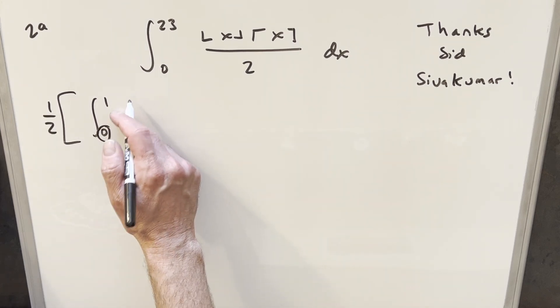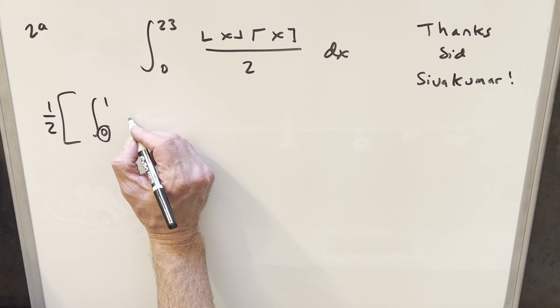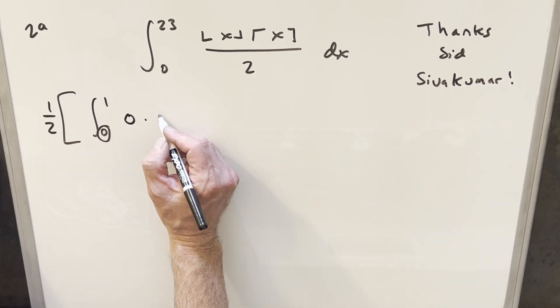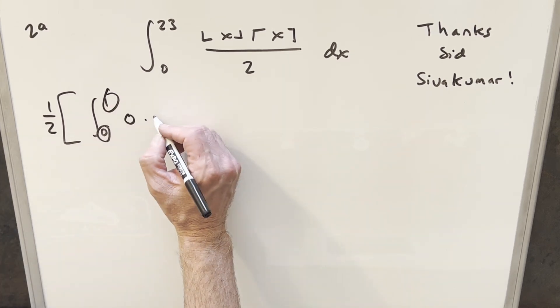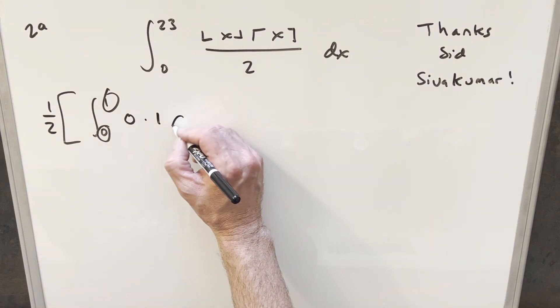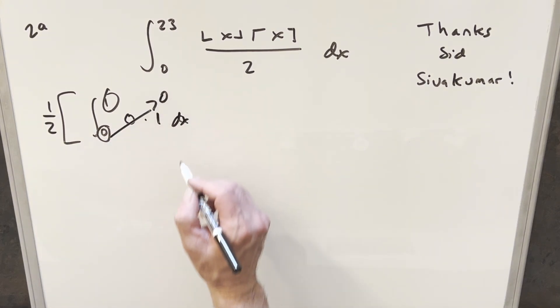And then what's going to happen is the floor is going to round us down to the lower bound, or the next lowest integer in this area between 0 and 1. Everything gets rounded down to 0, and the ceiling is going to round us up to the upper bound. So this is going to be 1. But really here we're just integrating 0, so this first integral is just going away.